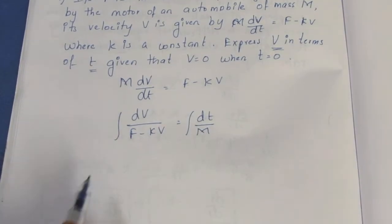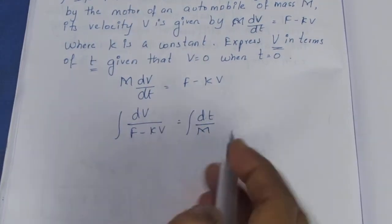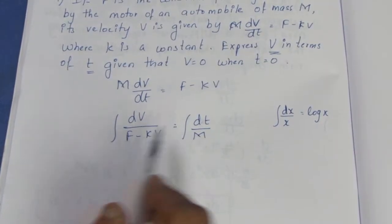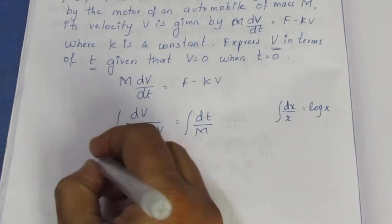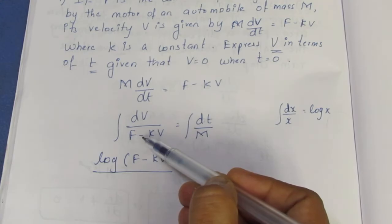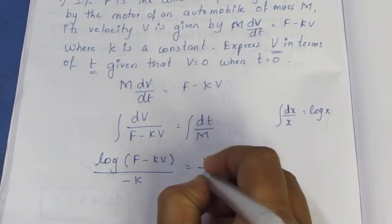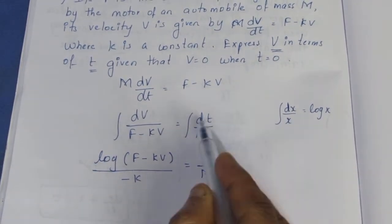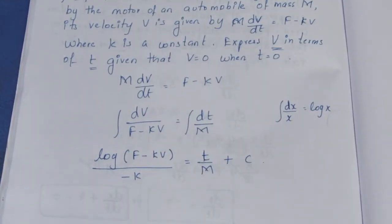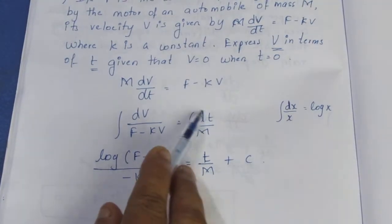The integral of 1/x is log x. The same way, we use the chain rule for log(F minus KV). When we differentiate the inner function with respect to V, it gives minus K. So the left side becomes minus log(F minus KV) by K, and the right side is t by M, plus constant C.